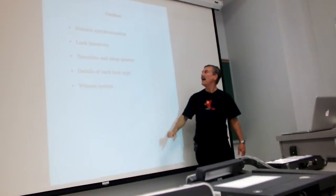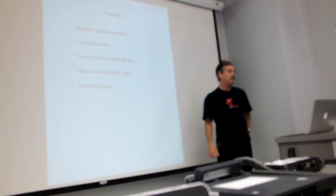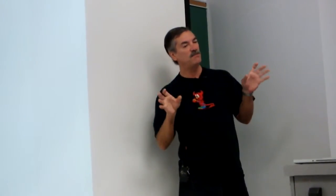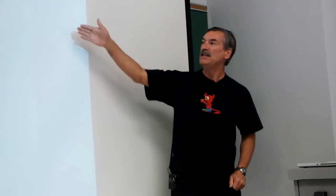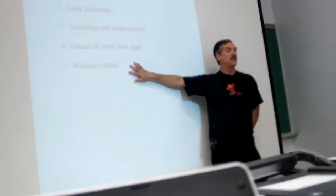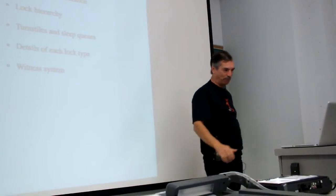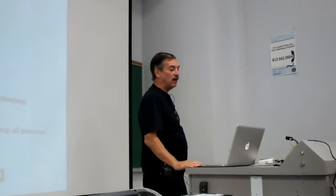The management of locks now uses two different sets of data structures: things called turnstiles and a thing called sleep queues, which are for the two main classes of locks. I'm going to talk about those data structures, because if you understand what's going on behind the curtain, it makes it easier to understand the actual locks themselves. And then at the end, to the extent I have time, I'll talk about the witness system, which is the way you keep these things from getting all tied up in knots. Okay, so: historic synchronization.